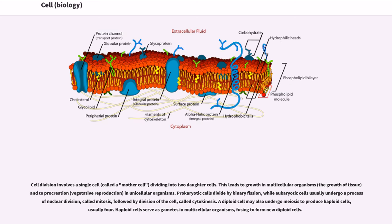Cell division involves a single cell, called the mother cell, dividing into two daughter cells. This leads to growth in multicellular organisms, the growth of tissue, and to procreation, vegetative reproduction, in unicellular organisms.